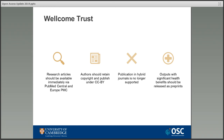Key changes include: where Wellcome Trust previously allowed a six month embargo, all research articles should now be available via PubMed Central and Europe PubMed Central at the time of publication. Authors need to retain the copyright in their articles and publish under a CC BY licence — an attribution licence — unless an exception is granted to use a CC BY NC licence, which is a reasonably rare circumstance. This ensures that other people, including those who want to do text and data mining on the outputs, are going to be able to reuse materials funded by Wellcome Trust.